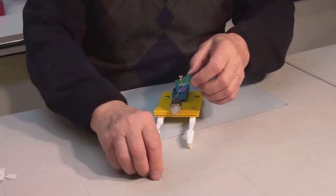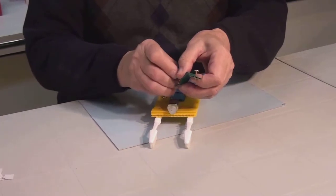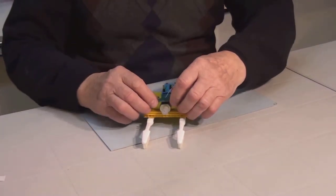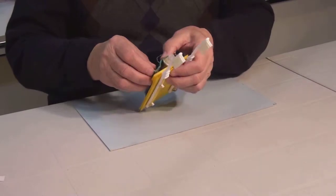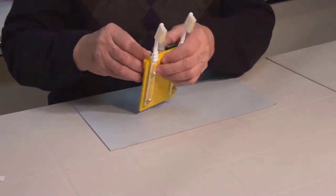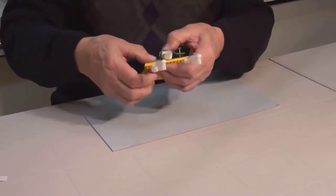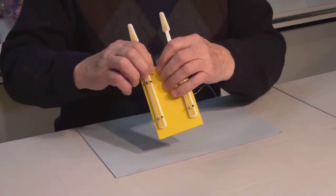Insert our paper fasteners halfway into the holes in the harness and guide them into the openings in the support plate. First on one side, then on the other. Bend the legs of the fasteners.